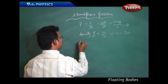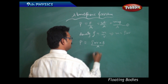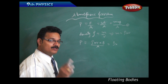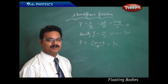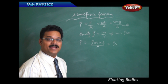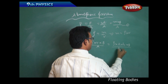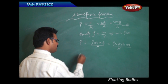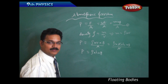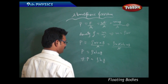Substituting the mass value, pressure P equals rho into V into G divided by A. Now, volume can be written as area into height, so it becomes rho into area into height into G divided by A. The area cancels out, so we get P equals rho into H into G, or simply P equals rho H G.